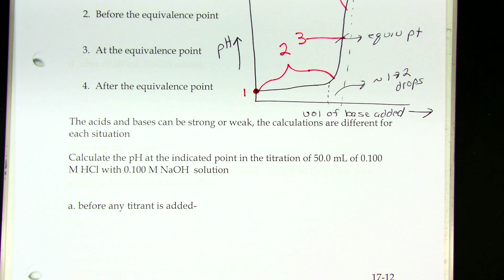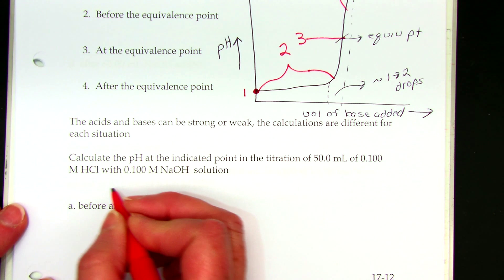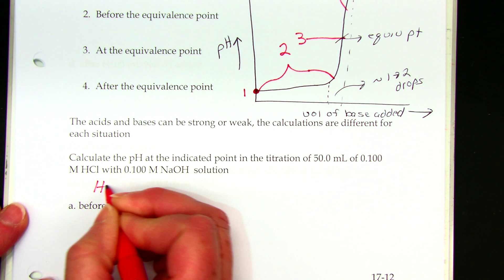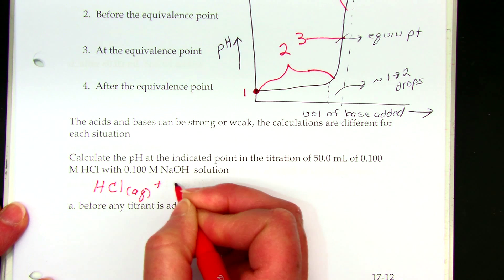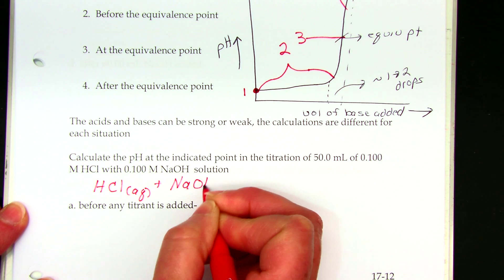The first thing to do is to just read the problem and think, what's in my beaker? And then we can write an equation for the titration. So what's in my beaker? Strong acid, HCl, and a strong base, sodium hydroxide.